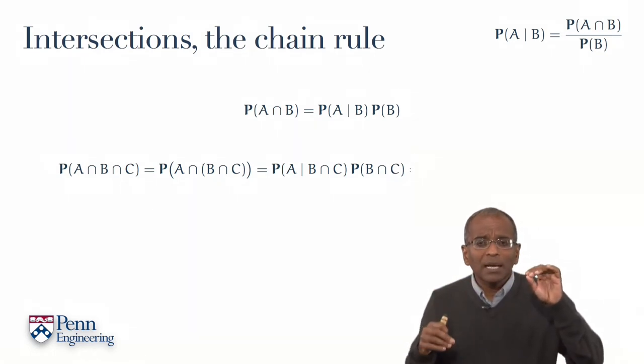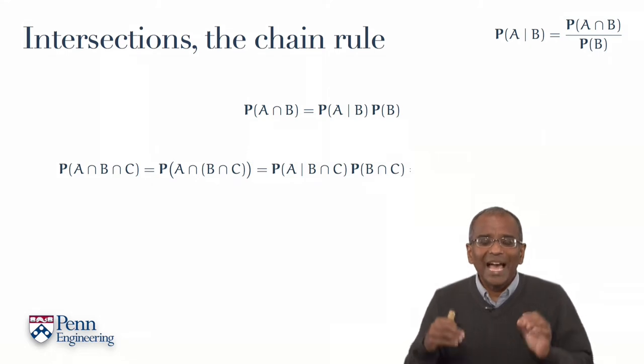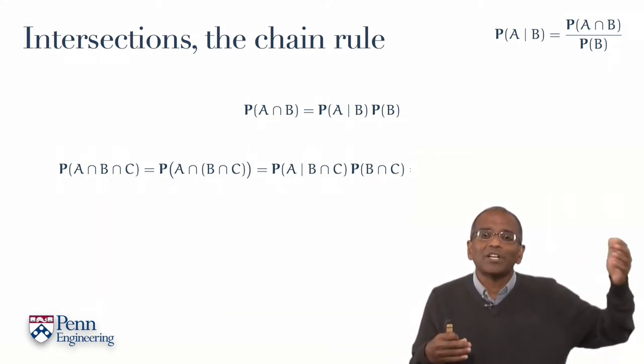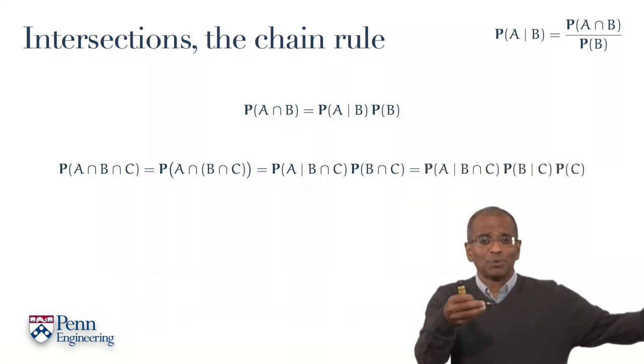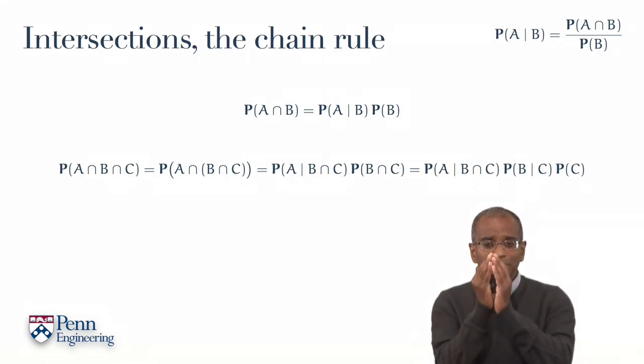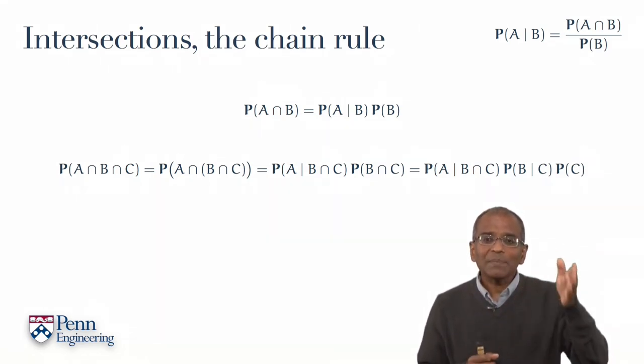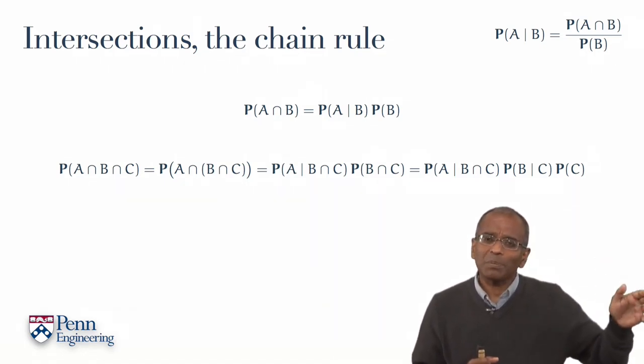Aha! But wait a minute. On the right now, I've got the probability of the intersection of two events. And the first line tells me I can write that in terms of conditional probabilities. And at the end, I now have a chain of conditional probabilities.